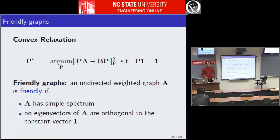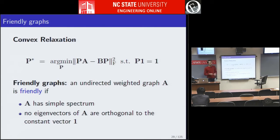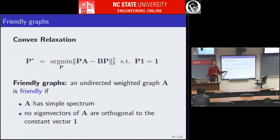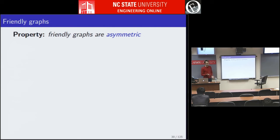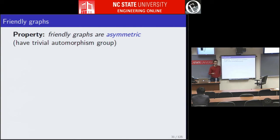I should emphasize that when I talk about spectral properties, I mean properties of the adjacency matrix itself, not the Laplacian — which is what graph theorists usually mean by spectral properties. This is unfortunate because eventually I would like to connect this to properties of manifolds characterized by spectral properties of the Laplace-Beltrami operator, the continuous version of the graph Laplacian. But there is no direct connection to that object here.